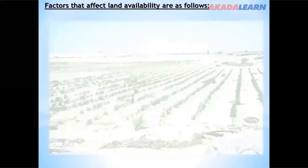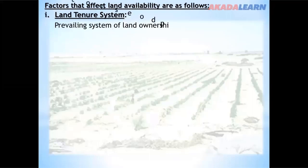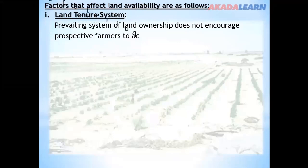Factors that affect land availability are as follows. First, land tenure system. The prevailing system of land ownership does not encourage prospective farmers to acquire large hectares of land.